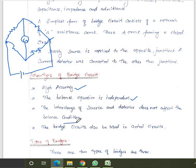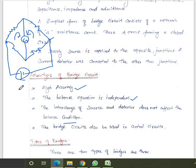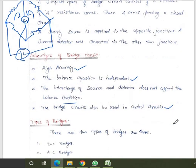The interchange of source and detector does not affect the balance condition. When the circuit is balanced — meaning both loops carry the same current value — the galvanometer reads zero. During balanced condition, the source and detector can be interchanged without affecting balance. Bridge circuits are also used as control circuits for some specific applications.